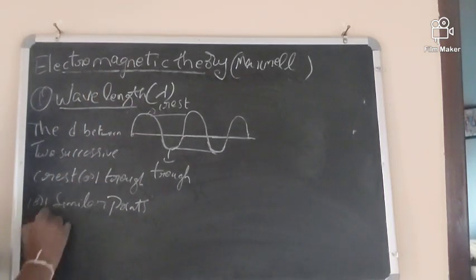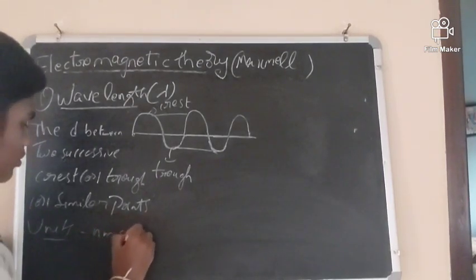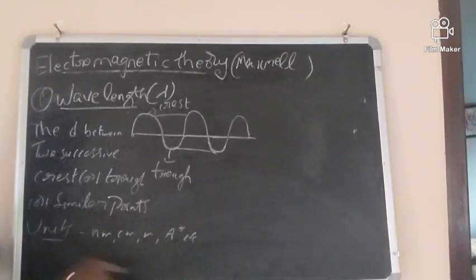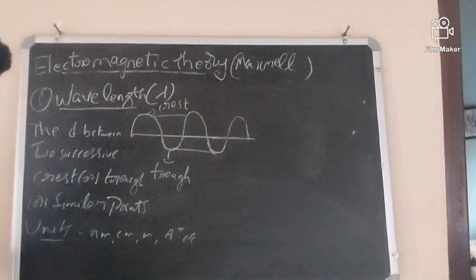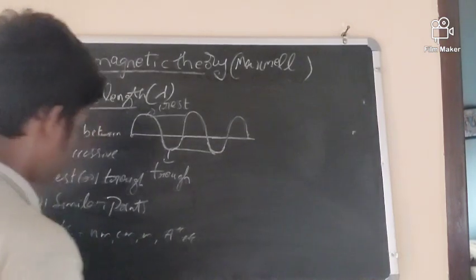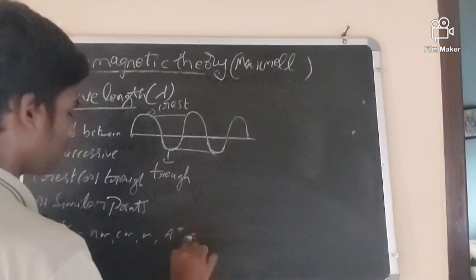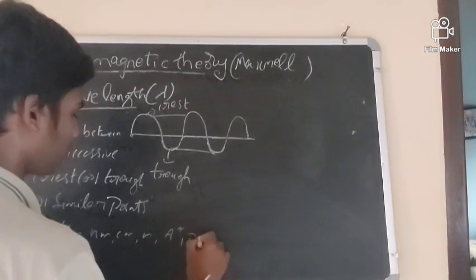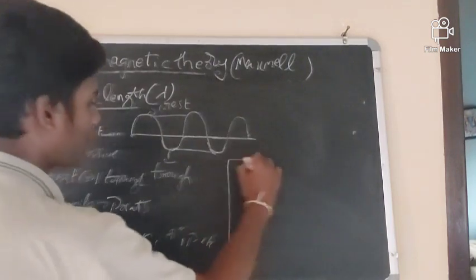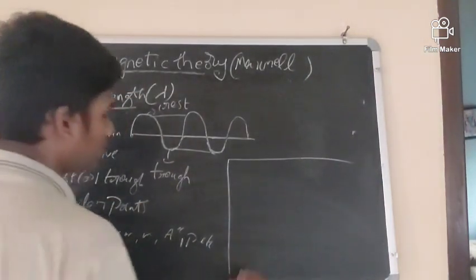What are the units of wavelength? Nanometer, centimeter, meter, angstroms, picometer, etc. These are the main units. Let us see some conversions according to these units.